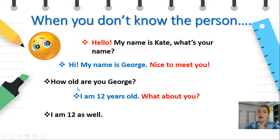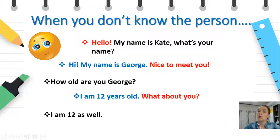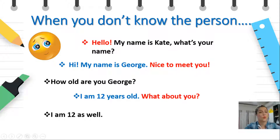Once they've introduced each other, they say nice to meet you. Kate is asking for information: how old are you, George? And George is answering: I'm 12 years old. But he wants to know more information about Kate, so he asks: what about you? And she says: I'm 12 as well. So hello, hi, nice to meet you, what about you — these are expressions that we use when we don't know someone and we want to know more about them.